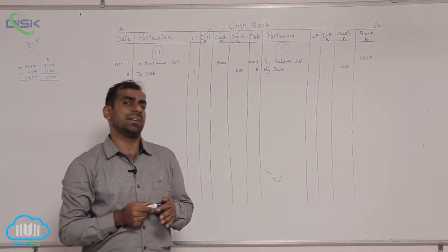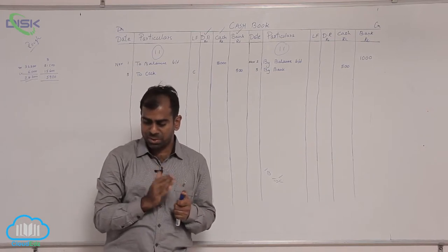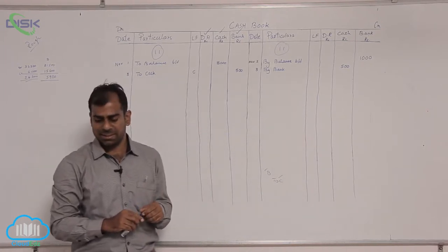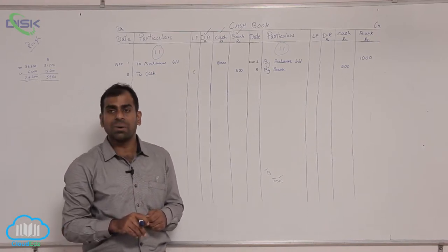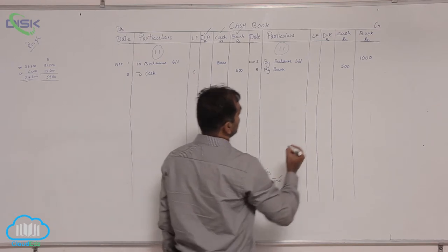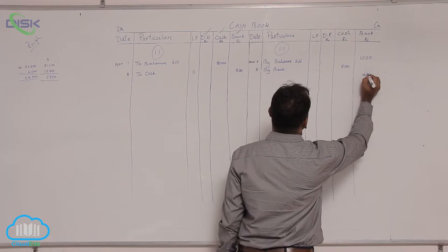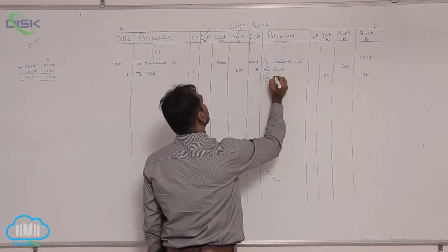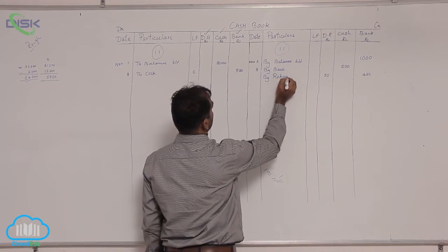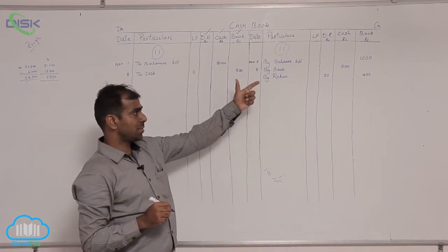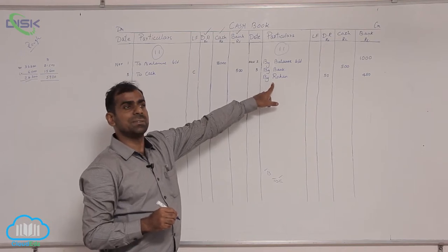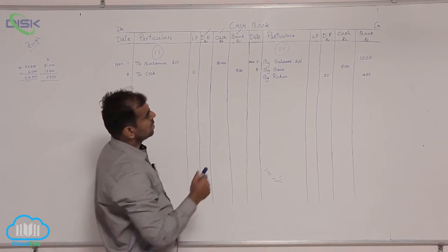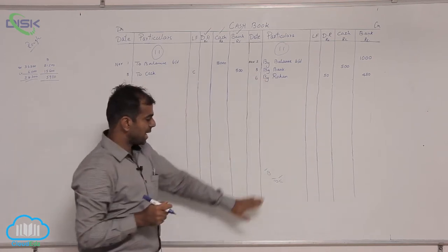On the 6th, a check is issued to Rohan with discount received. Since it is a payment, record the transaction on the credit side. Because it is a check, record the amount of 450 in the bank column. The 50 rupees discount received is recorded in the discount received column. The reason in particulars is 'by Rohan', and the date entered is the 6th.